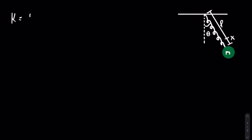Like always, the first thing we need to do is find the kinetic energy. The system has both translational and rotational kinetic energy. Translational is one half m v squared and the rotational is one half I omega squared. We will be using the angle theta as one way to describe the motion of the system, and it is important to know that omega is just the time derivative of theta, so we write theta dot.